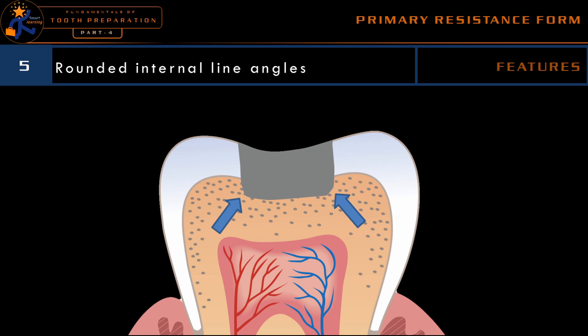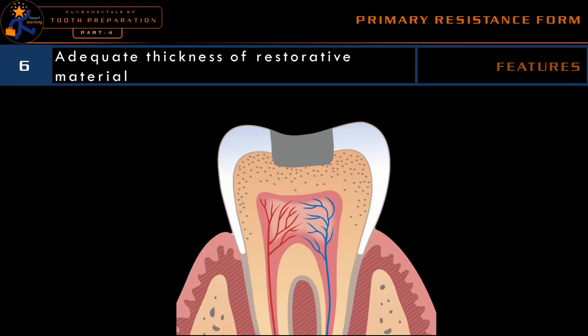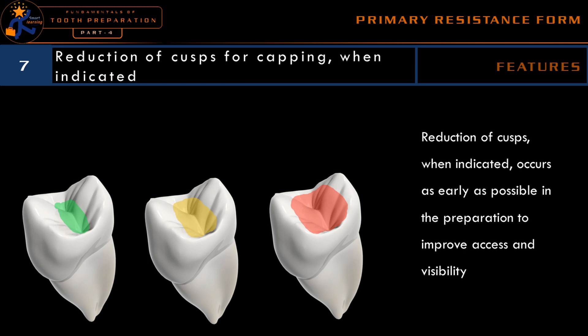The rounded internal line angles will prevent propagation of force from the restoration toward the tooth and prevent accumulation of stresses at certain points. For an amalgam restoration, the internal line angle should be rounded. For a cast restoration, the internal line angle should be definite — meaning it is neither round nor sharp, but in between. For a direct filling gold restoration, the internal line angles should be sharp. Direct filling gold is the only restoration where we purposefully prepare the line angles to be sharp, because the sharp internal line angle is needed to hold the direct filling gold material inside the tooth.